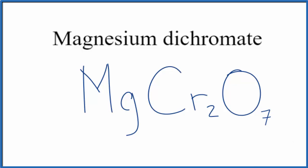So the dichromate ion, that has a 2 minus ionic charge. Since we have a metal and a polyatomic ion here, this is an ionic compound. We have to balance the charge.